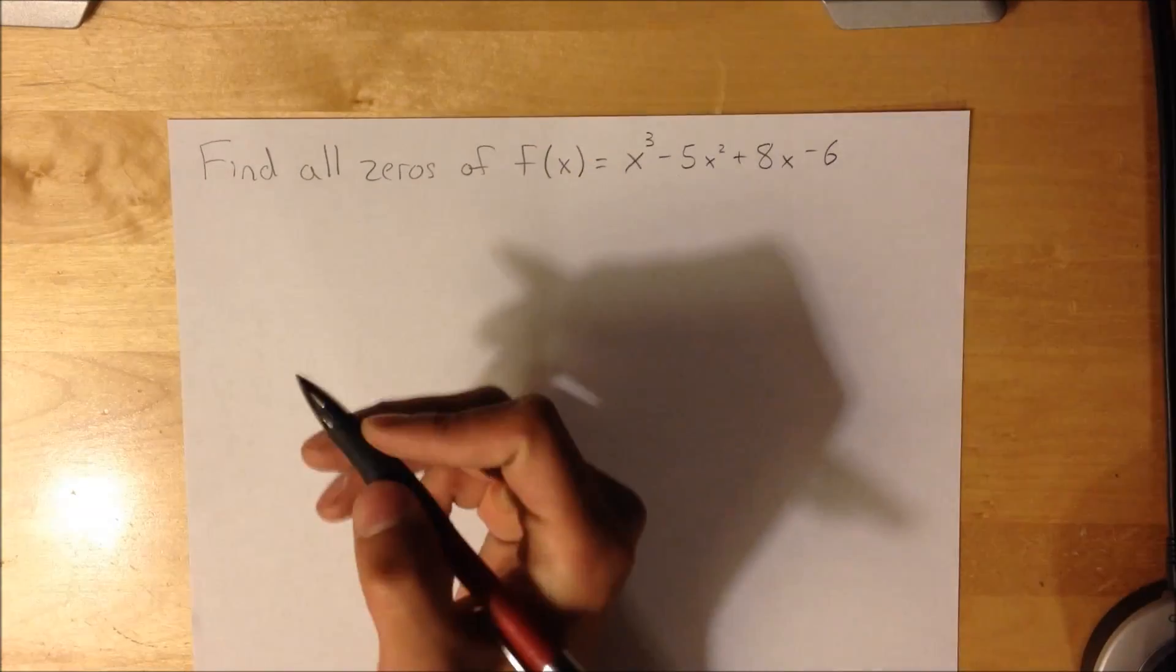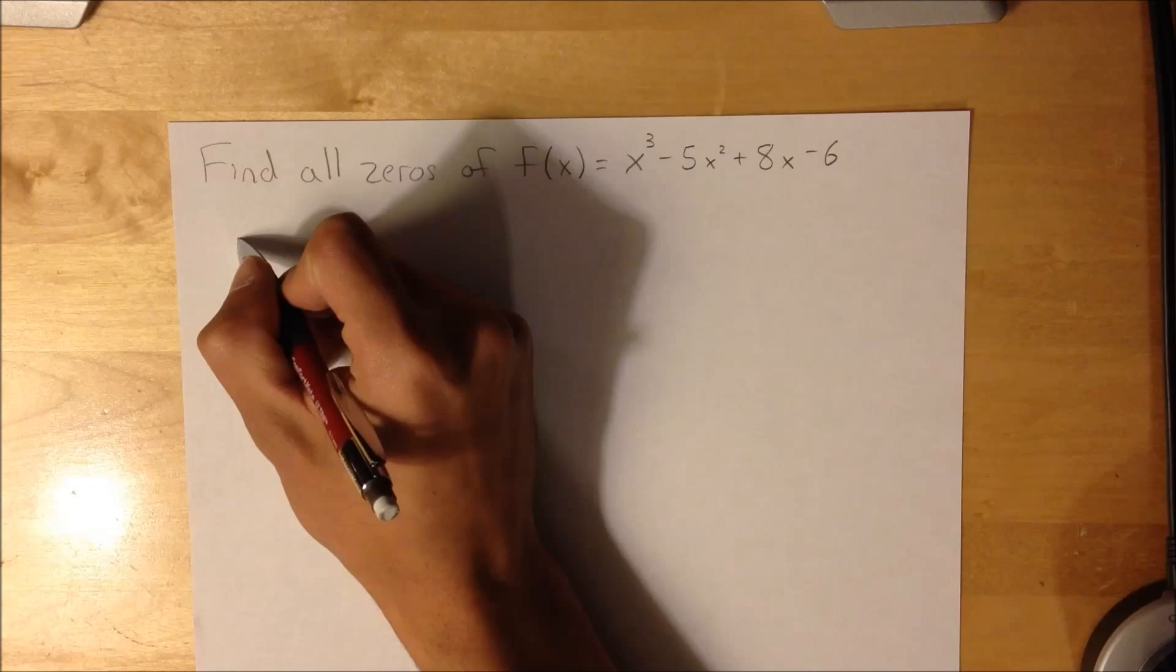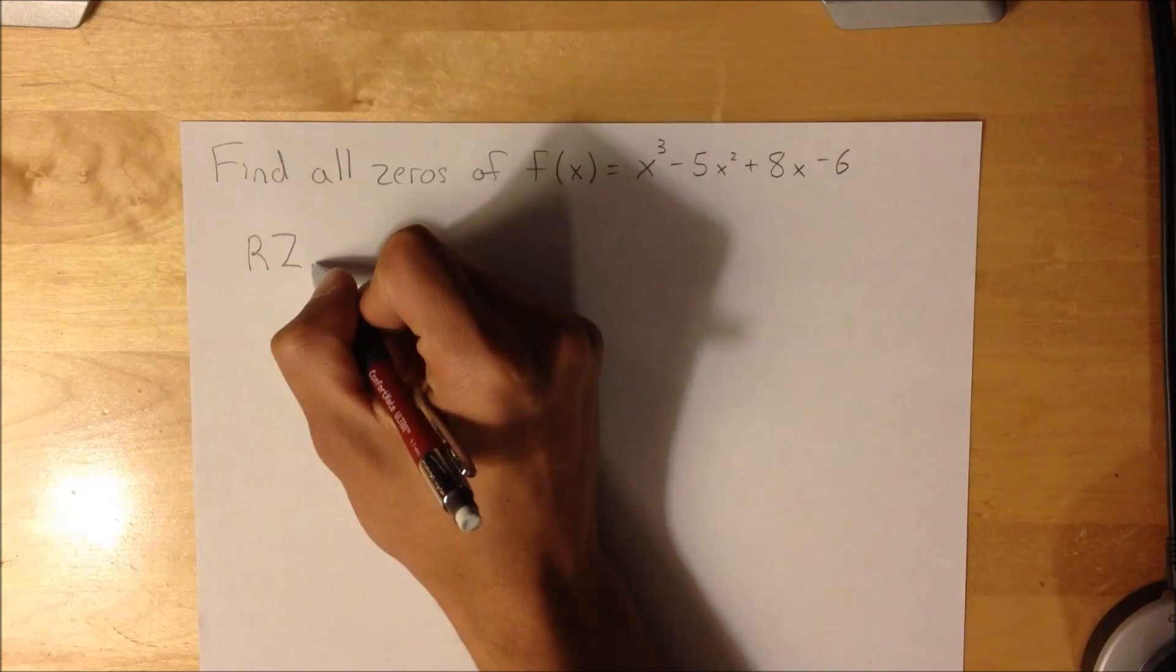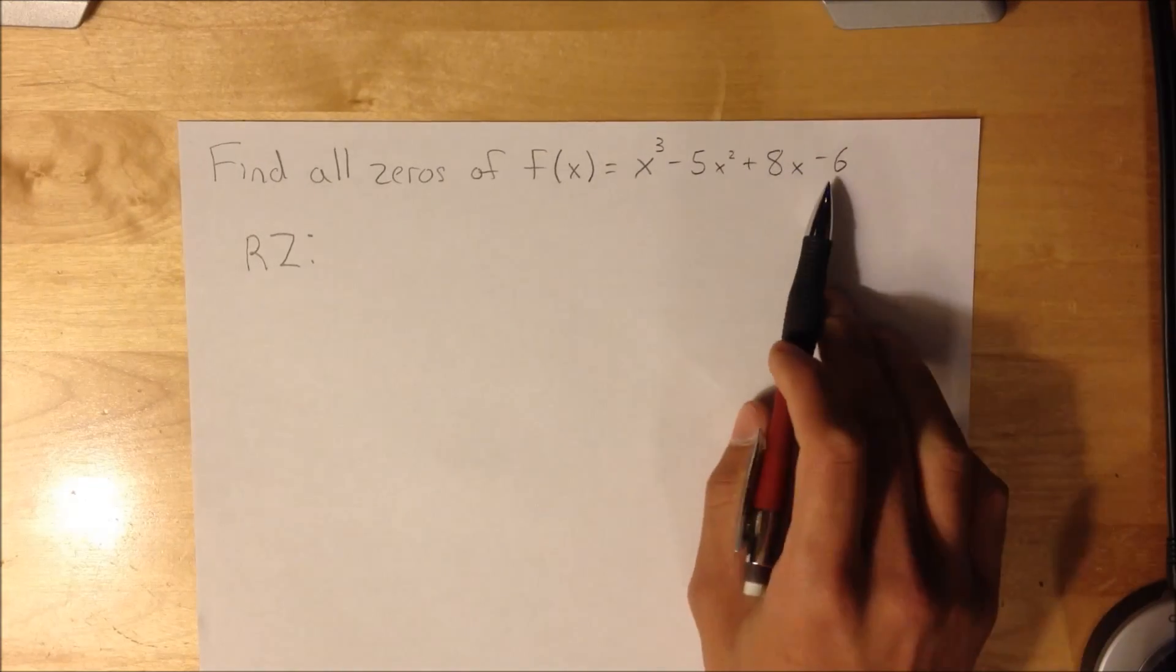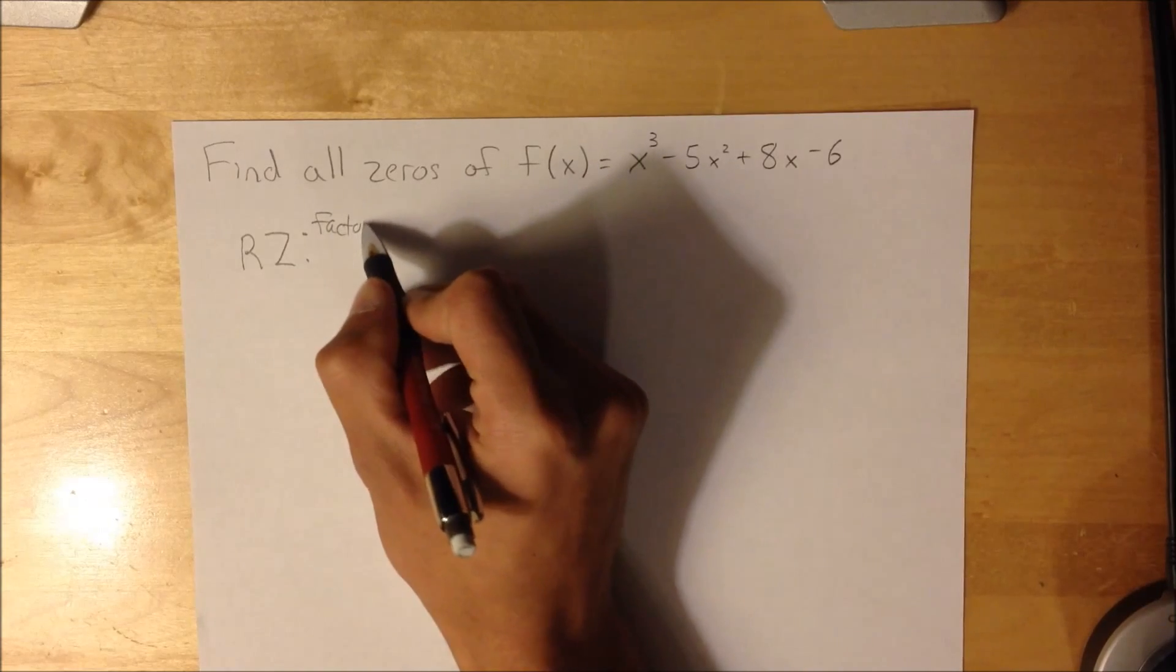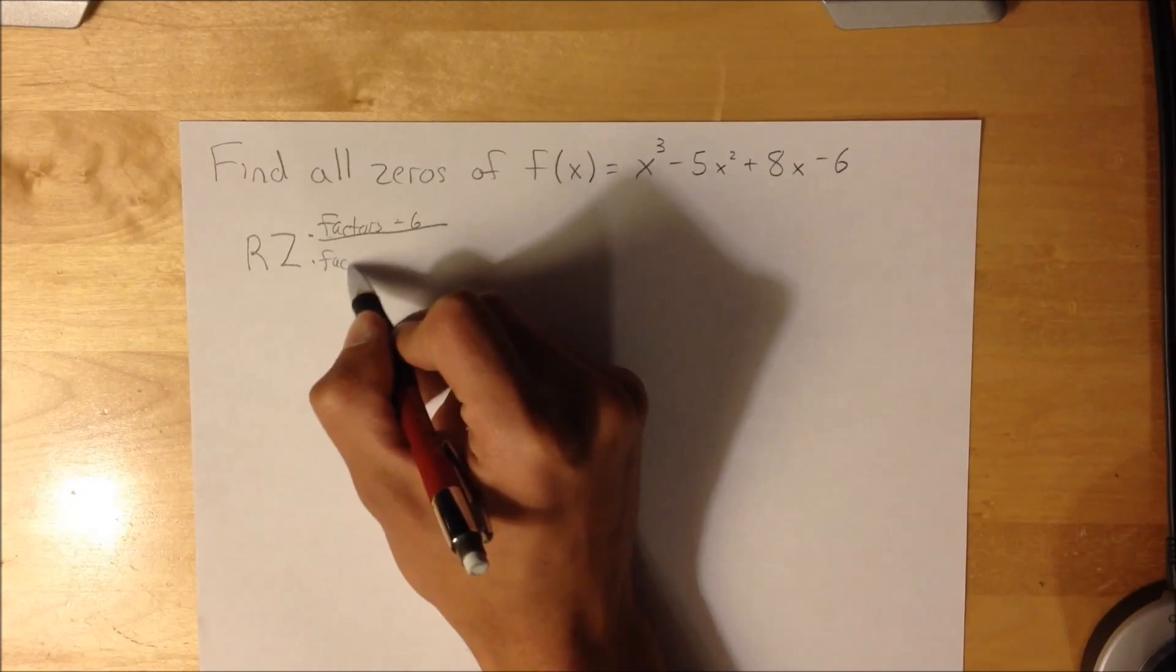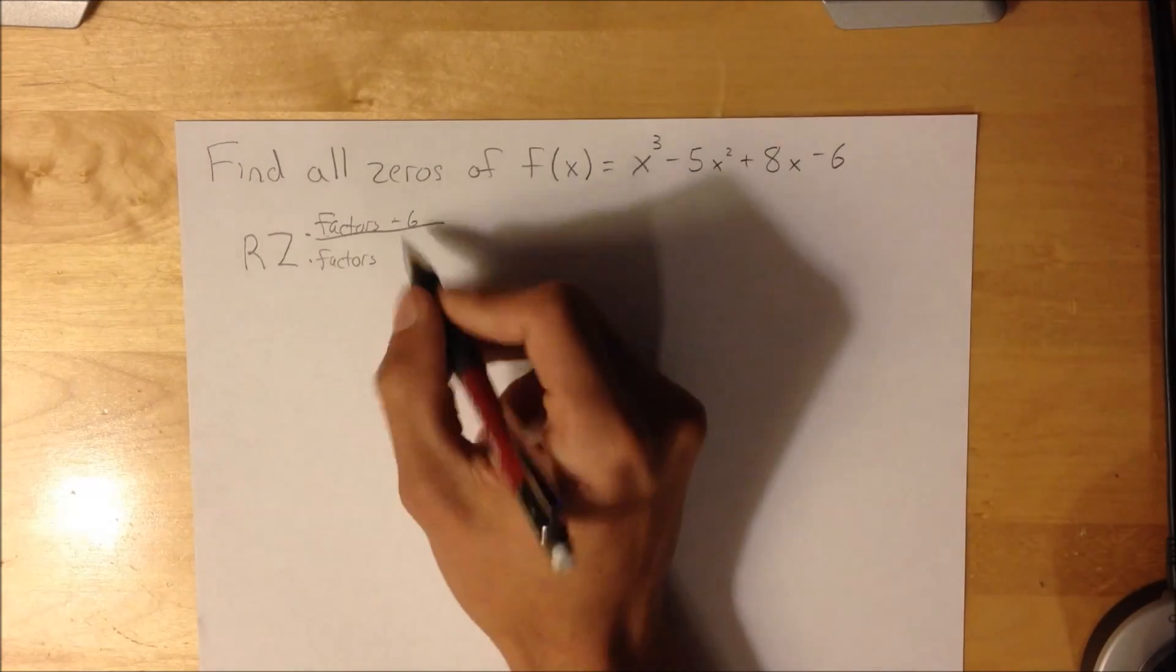To begin, first we need to find out what the possible zeros are using the rational zeros theorem, which is all the factors of your constant term, so it's going to be factors of -6 over all the factors of your leading coefficient term, which is just x³.